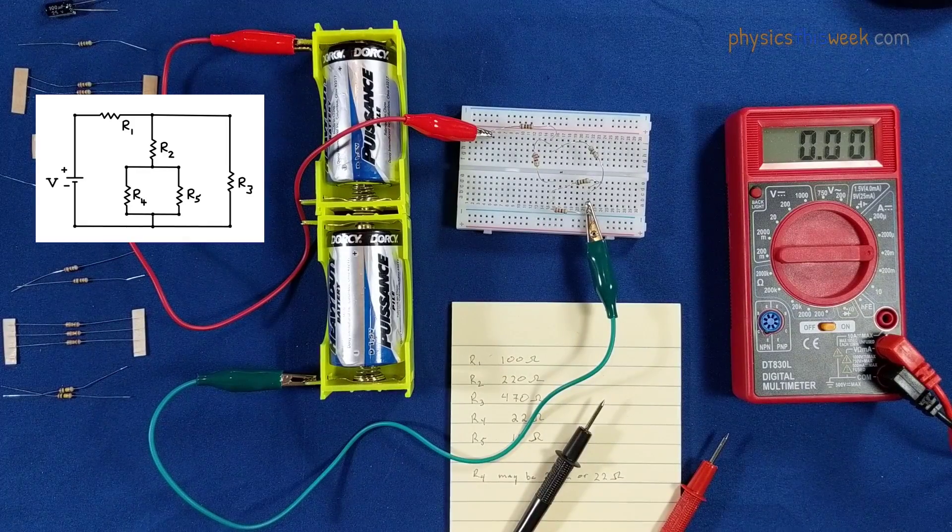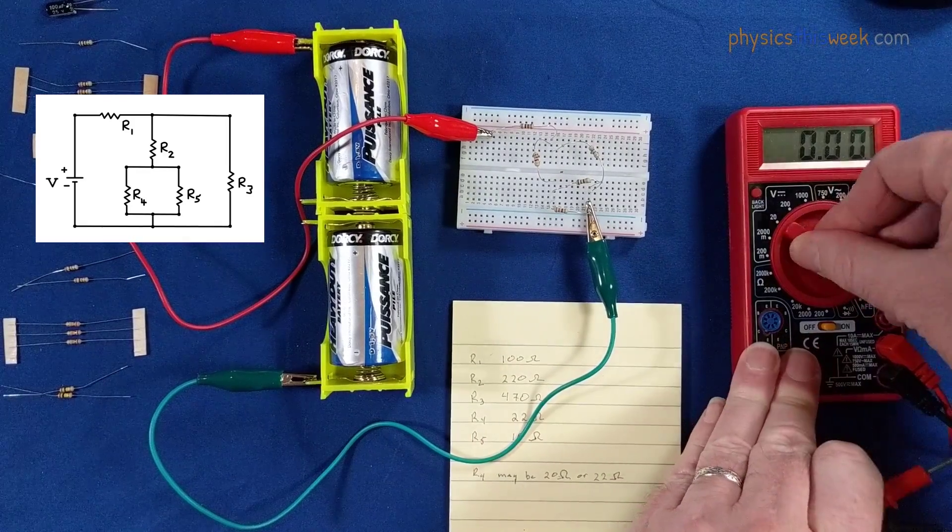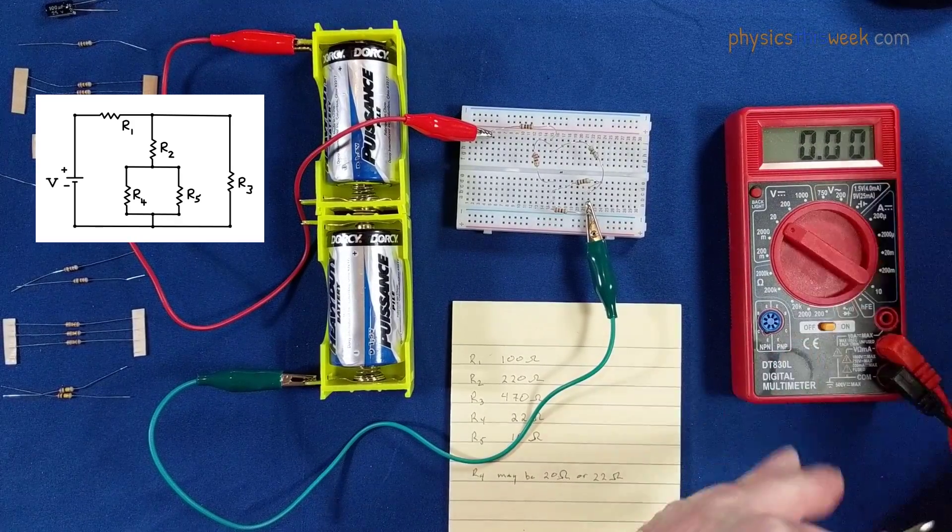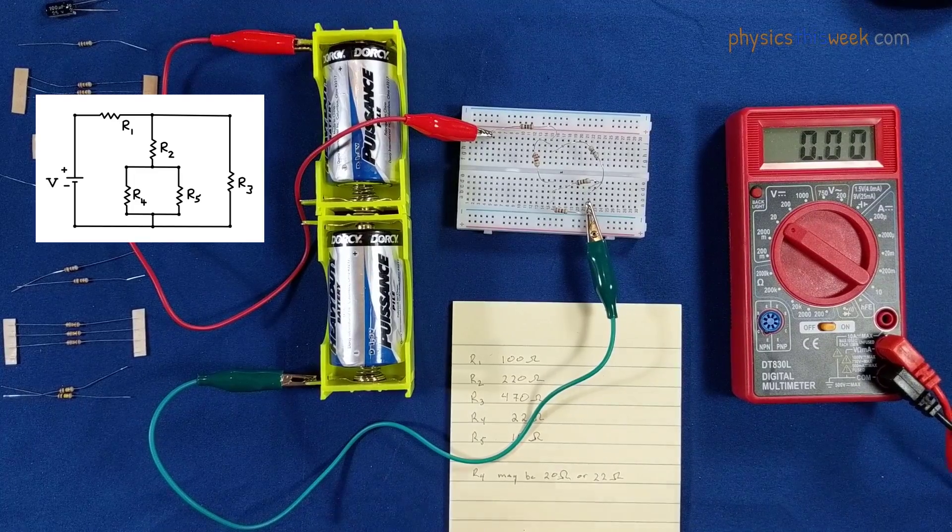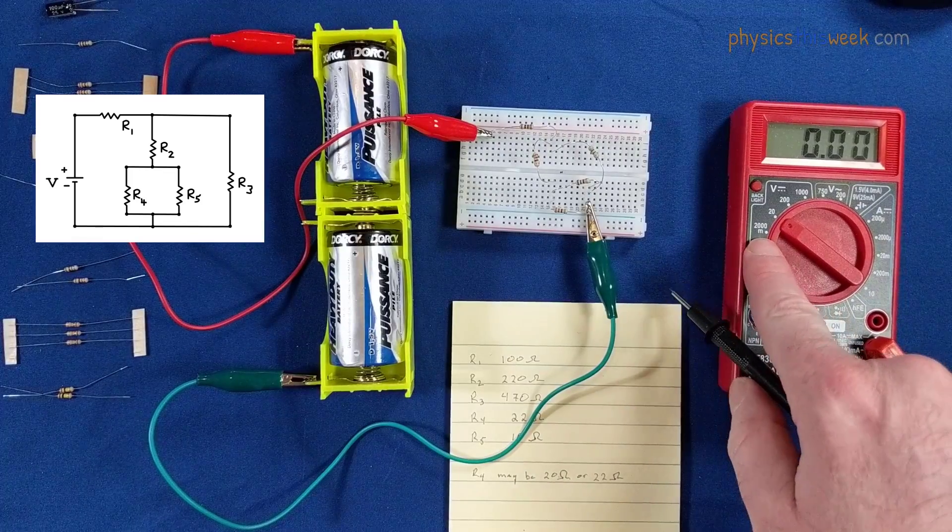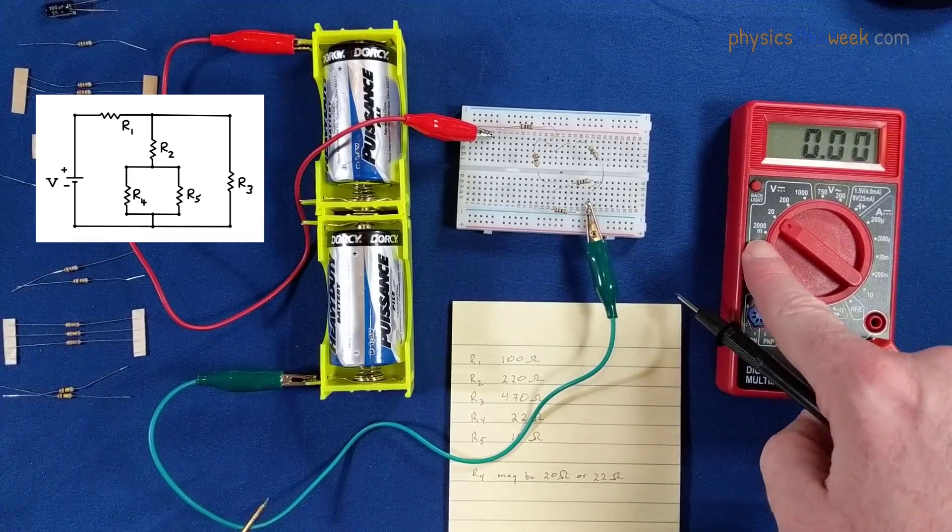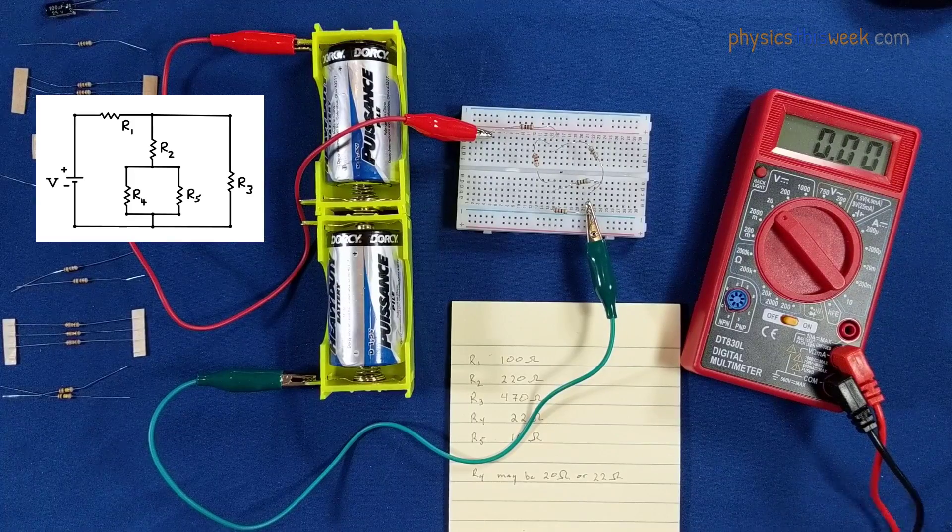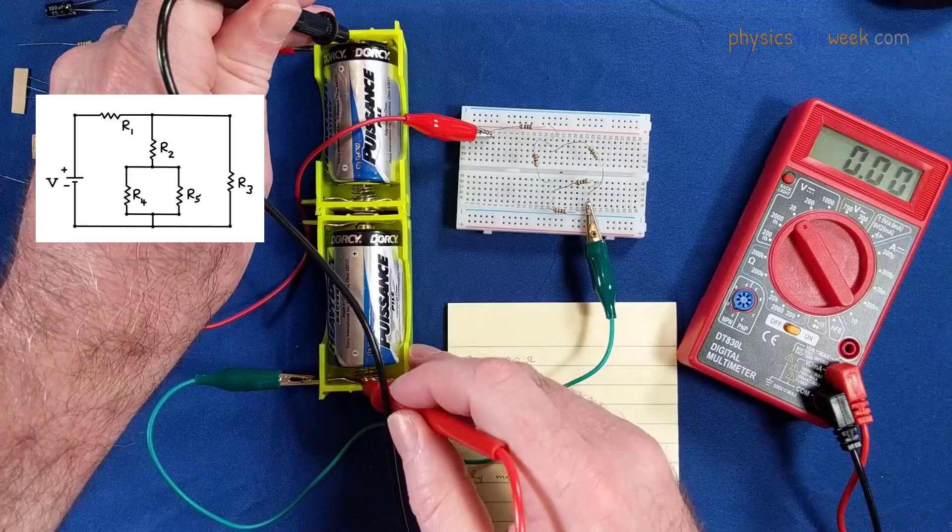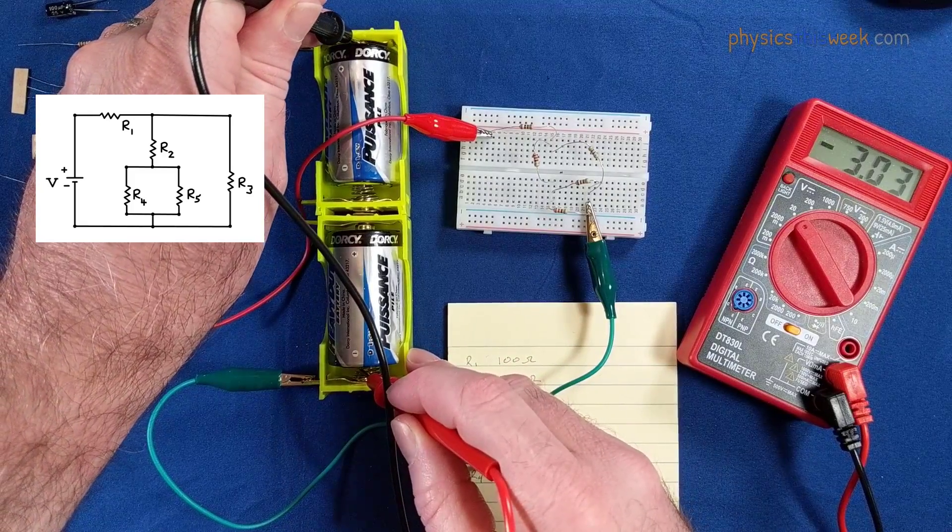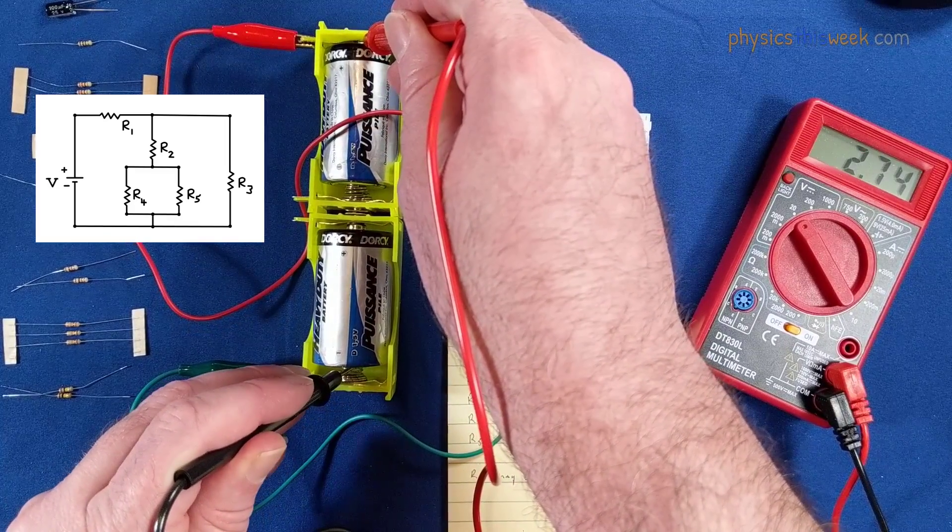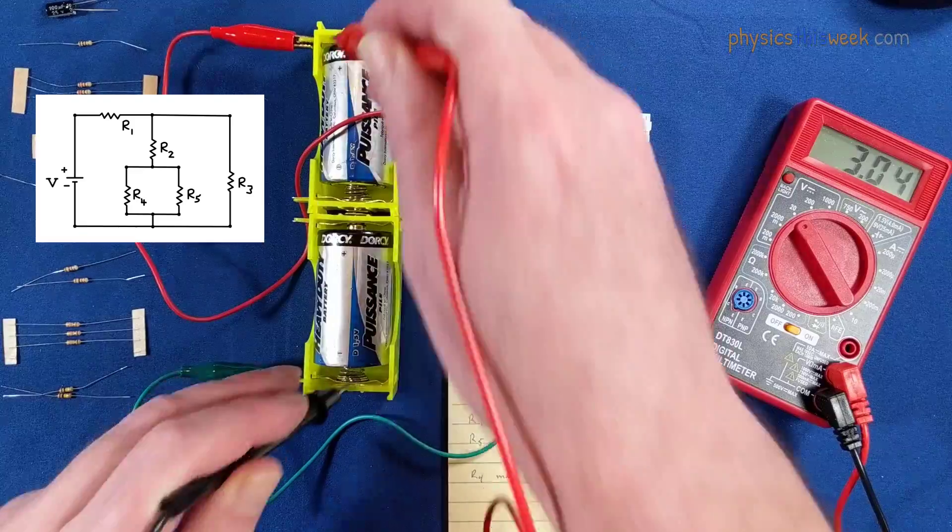We're ready now to measure the voltages across our circuit. This is the series and parallel combination circuit. As a check, let's check the battery. I'm going to put this at 20 volts maximum because 2,000 millivolts is only 2 volts. The battery should have approximately 3 volts. And if I put that in the right order, there you go, about 3.04 volts.